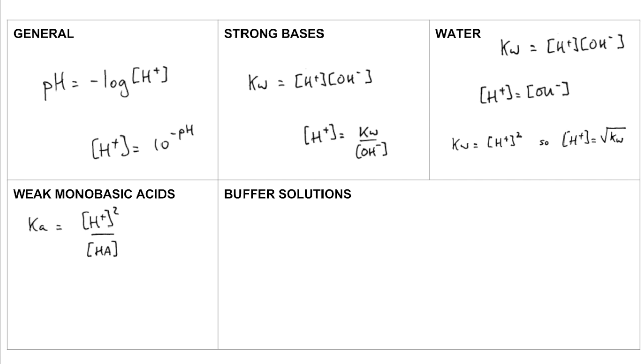So we can simplify the KA expression to H plus concentration squared over HA. And then rearranging that for H plus concentration, we get the square root of KA times HA concentration. Or square root of KA is an easy way to remember that.